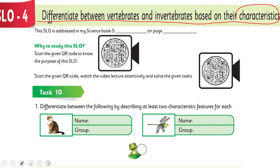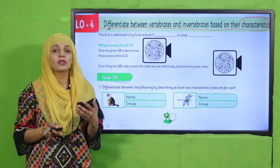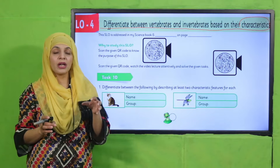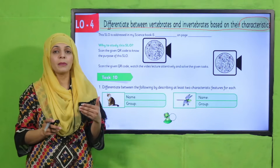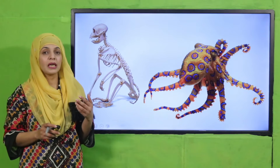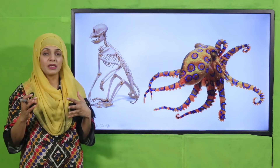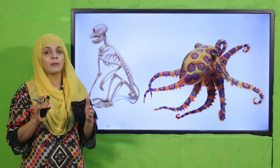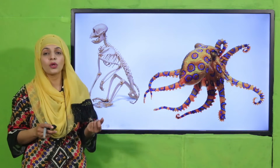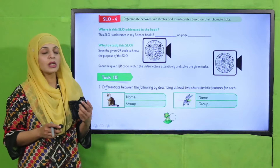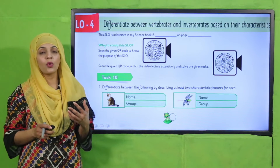Previously, classification ke baad aap ne animals ko categorize karna hai between vertebrates and invertebrates, aur us ke darmiyaan bachay different shapes bhi kar sakenge. Is SLO parhne ka purpose ye hai ke bachon ko dolou us animals ki tarha ke unki categories ke baare mein pata chal jaye — bachay differentiate kar sakein ke kaunse animals ko vertebrate group mein rakhna chahiye aur kaunse ko invertebrate group mein.